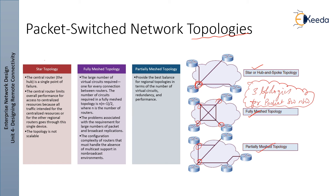Star topology, also called hub-and-spoke topology, features a single inter-networking hub — for example, a central router — that provides access from remote networks into the core router. Communication between remote networks is possible only through the core router. Advantages include simplified management and minimized tariff costs due to the low number of circuits. Disadvantages include the central router being a single point of failure, the central router limiting overall performance, and the topology not being scalable.